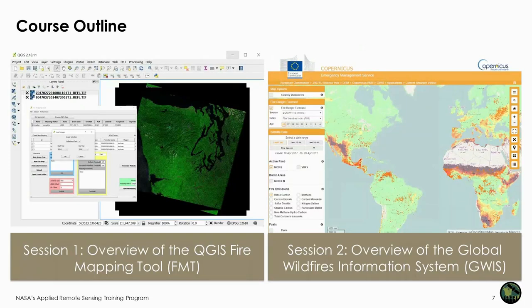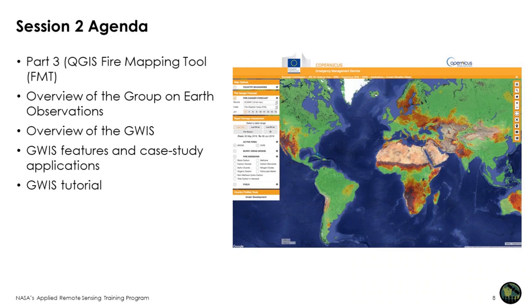Last week, Josh Picott gave you an overview of the FHIR mapping tool. This week, I will be giving you some information and a short demonstration on the Global Wildfire Information System, or GWIS. For today's agenda, Josh will complete the exercise we began last week, picking up where we left off on Part 3. Then I will give an overview on the Group on Earth Observations, or GEO, followed by an overview of the Global Wildfire Information System.